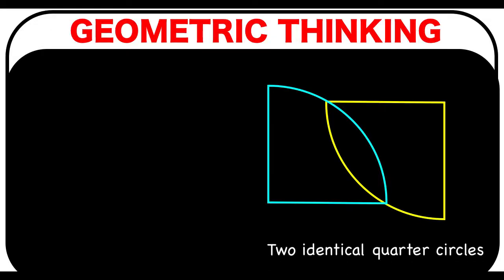We are given here two identical quarter circles. We have this blue quarter circle and this yellow quarter circle. The radius of this quarter circle is two units. And the distance between these two quarter circles is given to be three units.